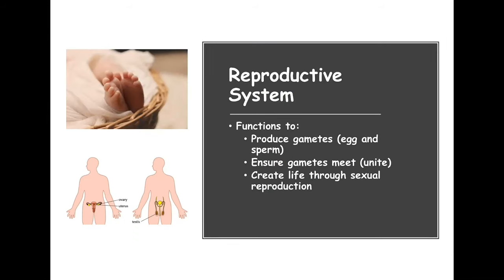The reproductive system, and I kind of started off with this when I spoke about the males, serves a variety of purposes. All living things must reproduce. When we talk about a very complex organism like ourselves, we have a reproductive system. The goals of the reproductive system are: first, you must have production of gametes. Gametes are sex cells, so like eggs and sperm.